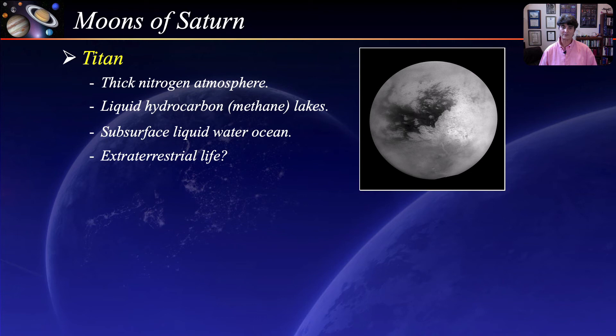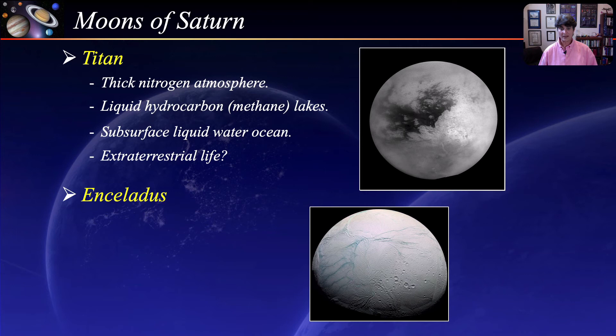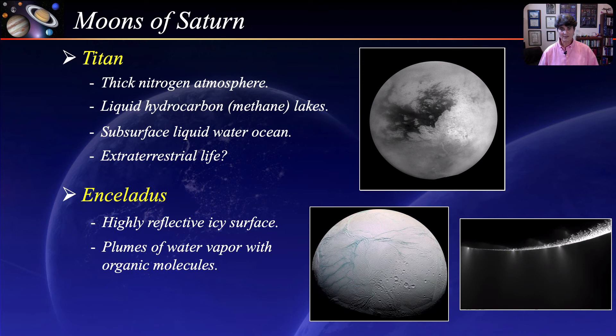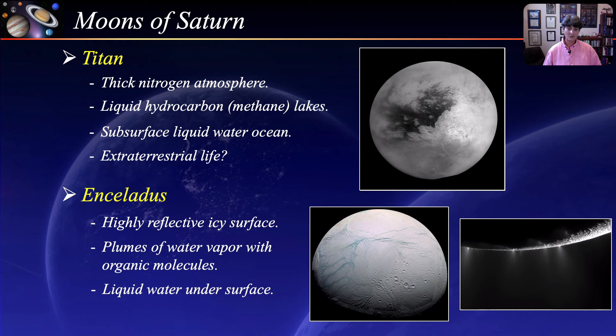Enceladus is another interesting moon of Saturn with a highly reflective icy surface. In 2005, the Cassini mission found jets of water vapor coming from its south pole. In June of 2018, analysis from the Cassini data indicates the presence of organic molecules within these jets. Studies of these watery geysers show they originate from a body of subsurface liquid water, and where there is water, there could be primitive microbial life. Both Titan and Enceladus are worthy of much greater study.